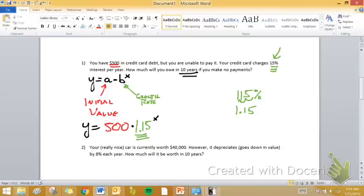So that's our function. And x is just going to be the number of times that we multiply that over and over again. So for this problem, it's going to be y equals 500, and every year we're going to multiply it by 1.15. And the number of times we're going to do that is 10, because it's in 10 years.